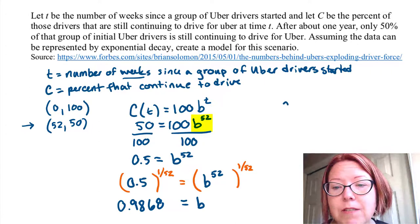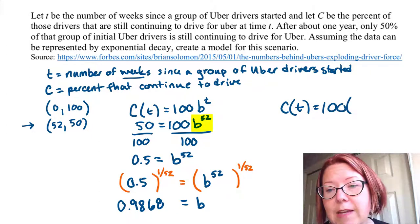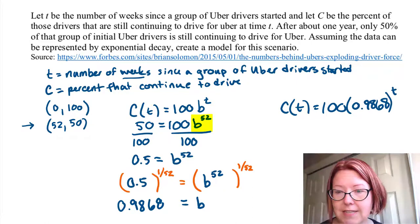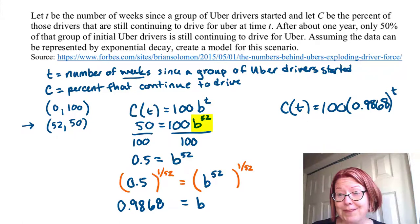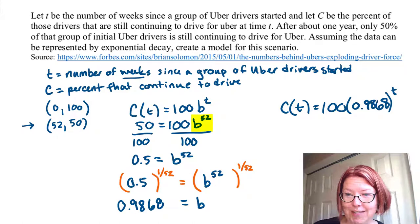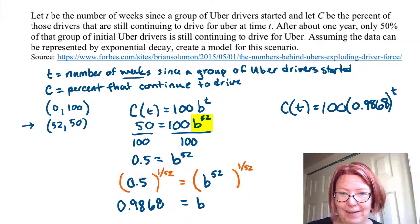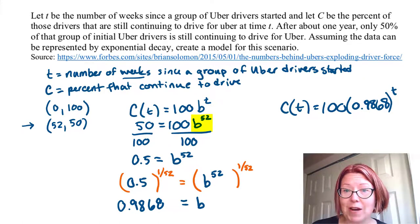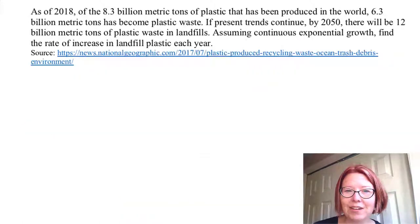Now I have the b value, so I can rewrite the model. It's C(t) = 100 times (0.9868) to the t power. There's the model for this scenario. You could go ahead and graph that model to make sure it looks right — specifically, that at one year you have about 50% of the drivers left.